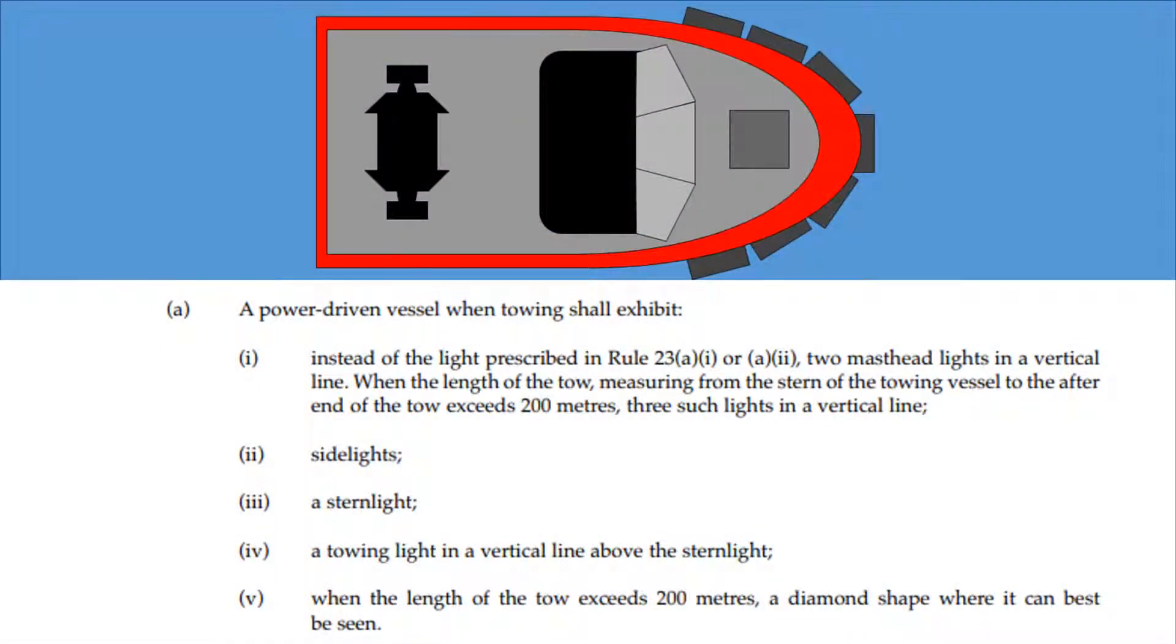A power-driven vessel when towing shall exhibit, instead of the light prescribed in Rule 23A Part 1 or A Part 2, two masthead lights in a vertical line. When the length of the tow, measuring from the stern of the towing vessel to the aft end of the tow, exceeds 200 meters,